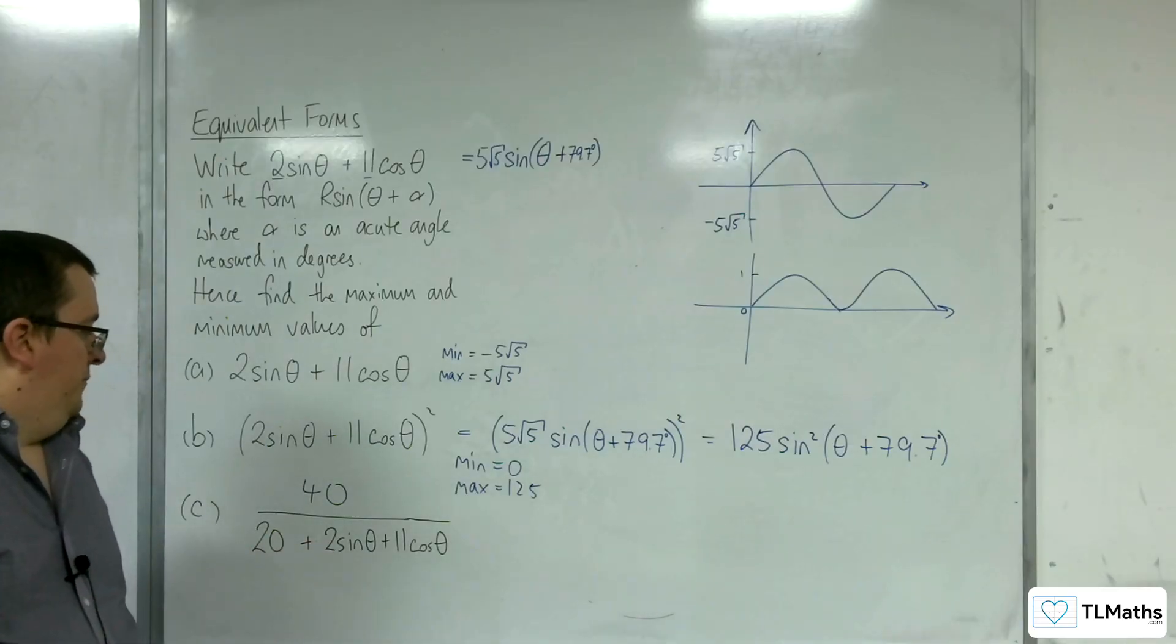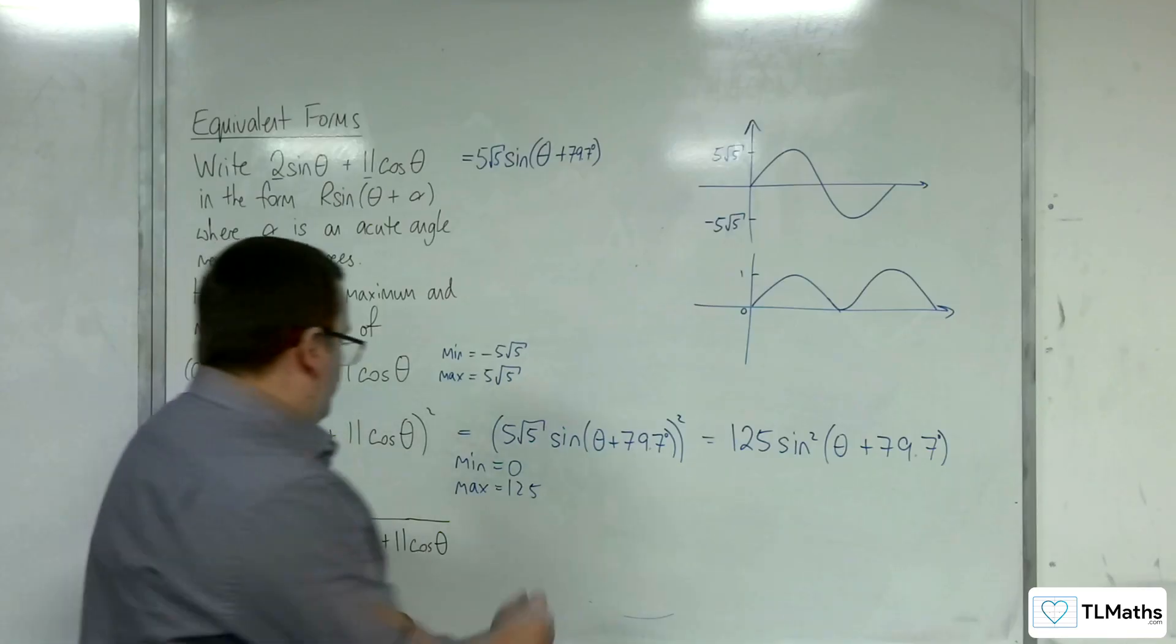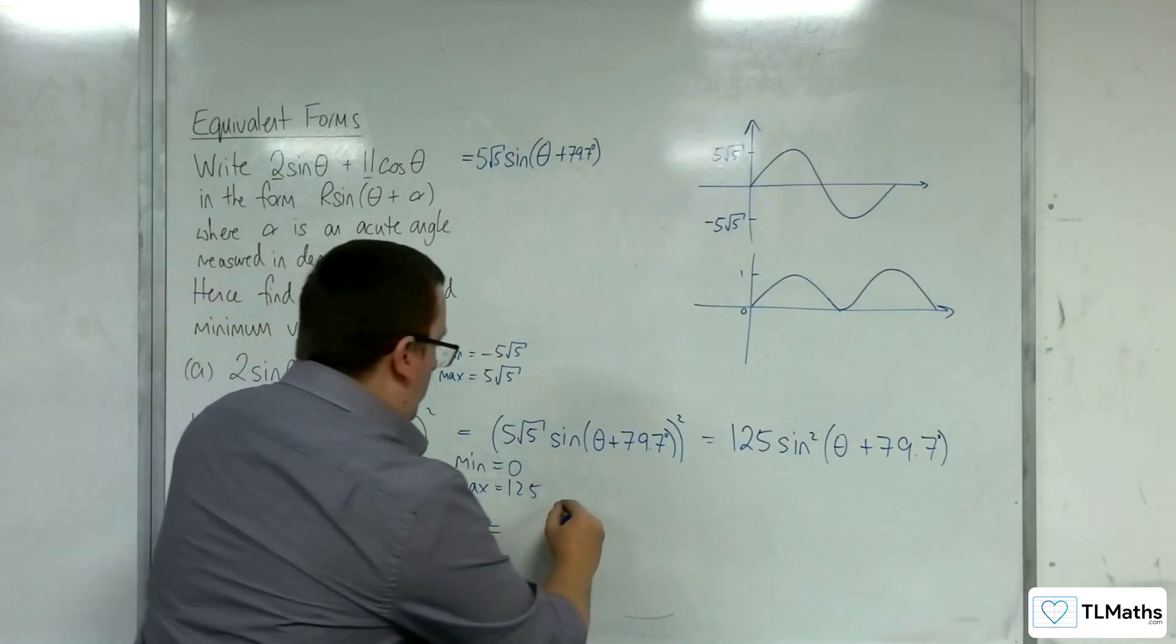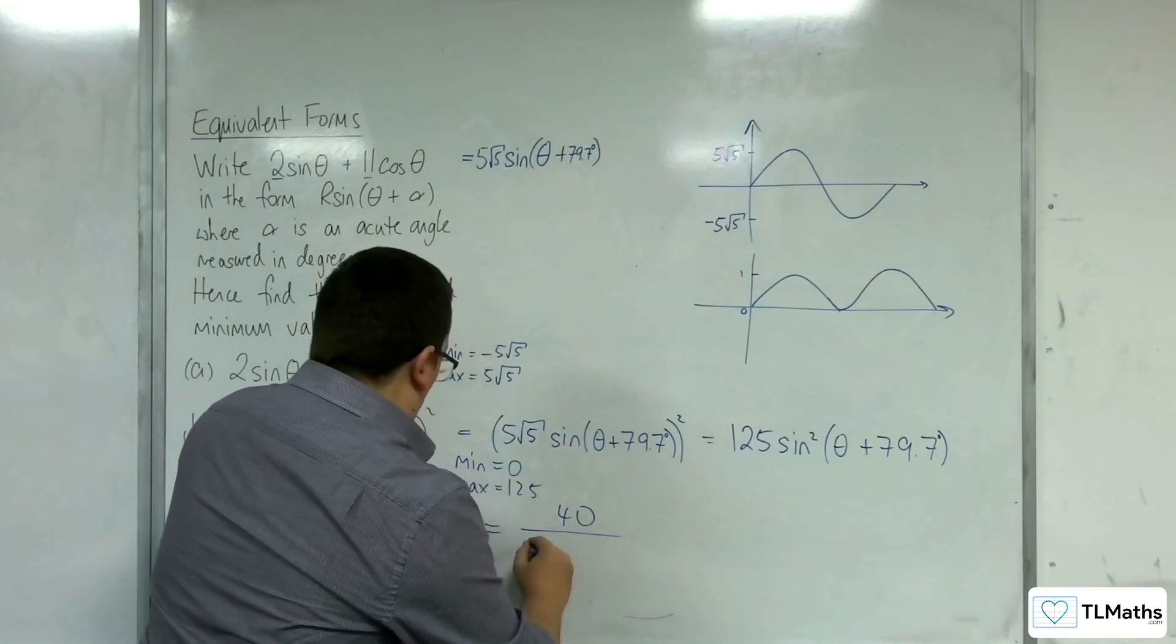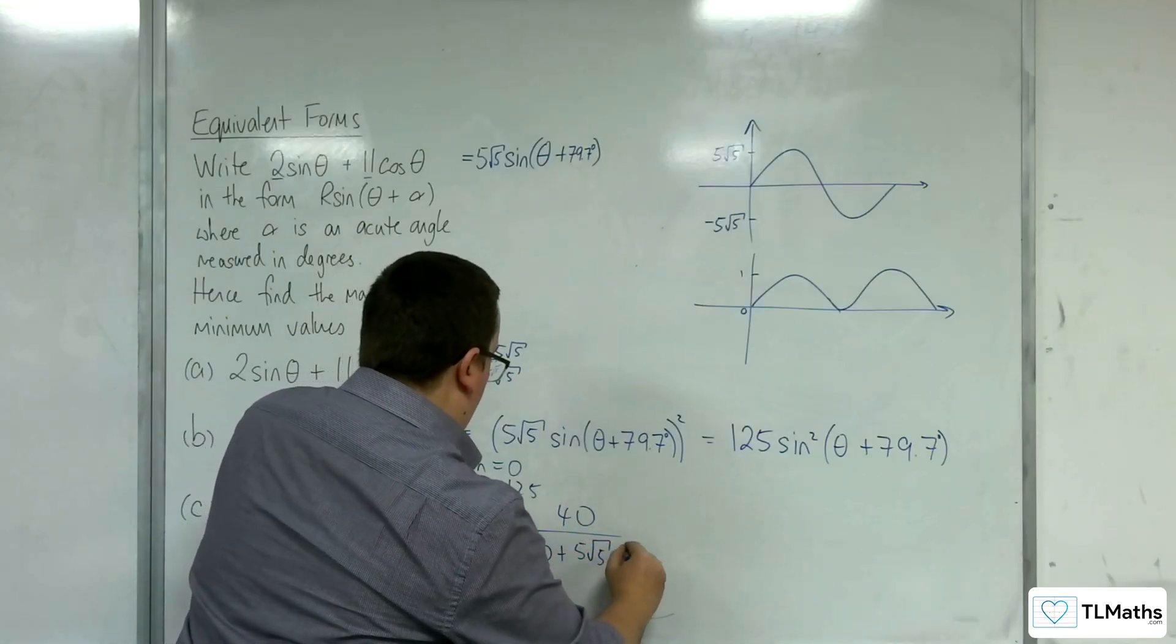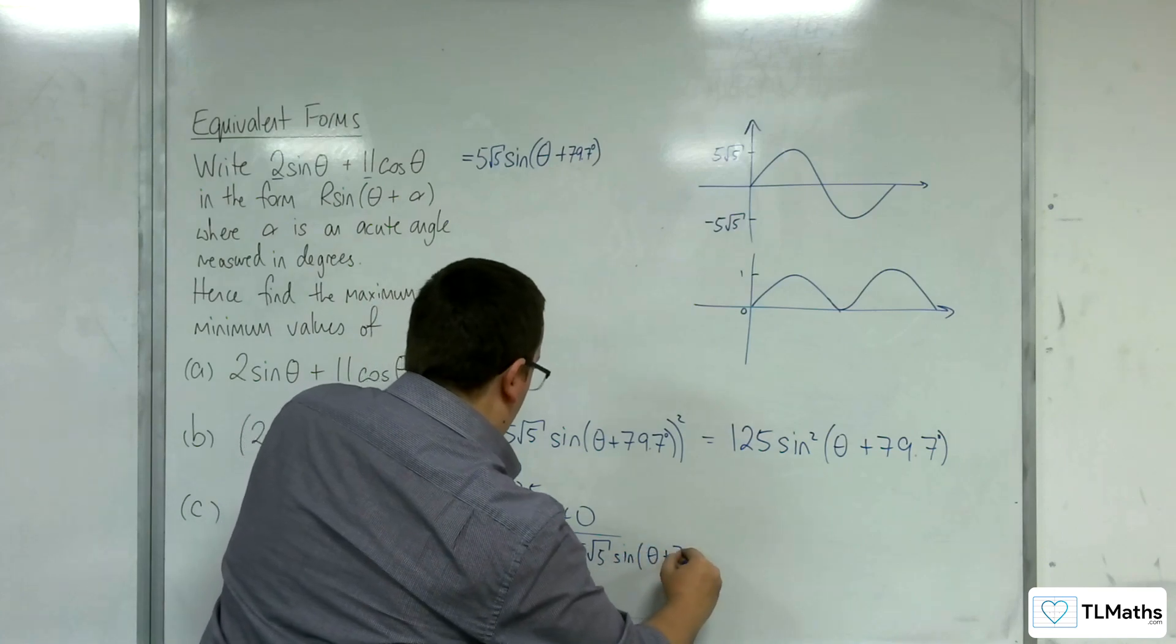Last but not least, we have 40 over 20 plus 2 sine theta plus 11 cosine theta. Now, we know what that is equivalent to, so that's what we worked out initially. So we've got 40 over 20 plus 5 root 5 sine of theta plus 79.7 degrees.